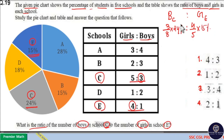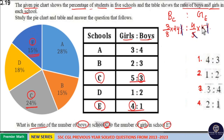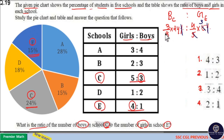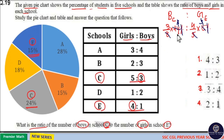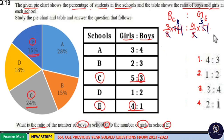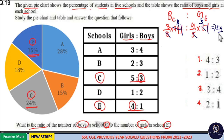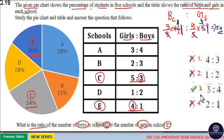Now the percentage and percentage cancel. 5 goes 3 times into 15, and 8 goes 3 times into 24. So 3 and 3 cancel, leaving 3 is to 4. Therefore the ratio is equal to 3 is to 4, so option 3 is your answer.